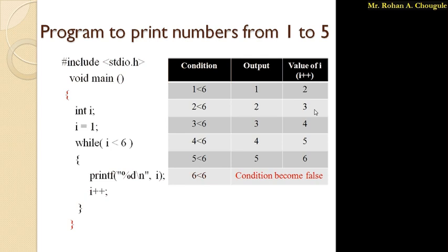Then value of i is 5. The condition 5 is less than 6 is true, so control enters the while loop, prints 5, and increments i to 6. Now it checks the condition: 6 is less than 6 — no, condition becomes false. Control moves outside the while loop. After the while loop nothing is written, so the program ends. The output we get is 1, 2, 3, 4, and 5.